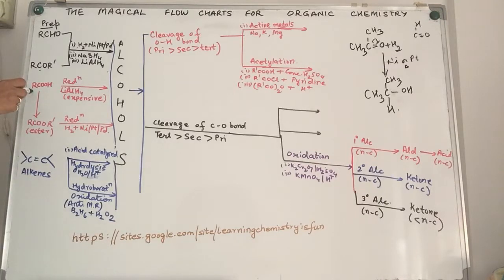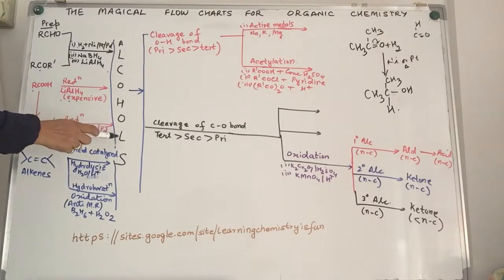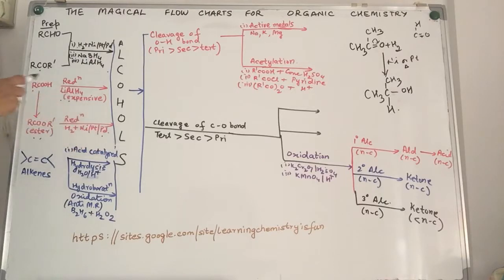Second example we've taken is carboxylic acid. Carboxylic acids can be reduced with lithium aluminium hydride, but since this is an expensive reagent we alternately convert a carboxylic acid to an ester. An ester can be easily catalytically reduced to give us the corresponding alcohol.